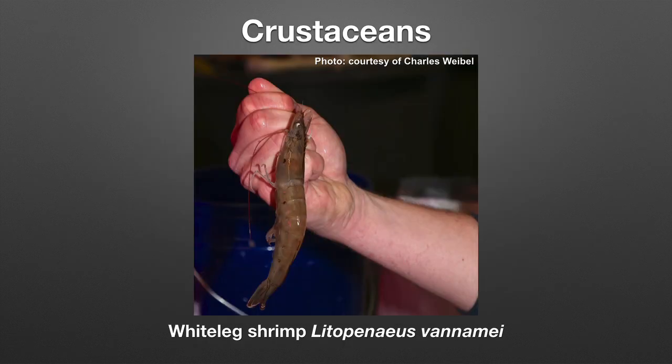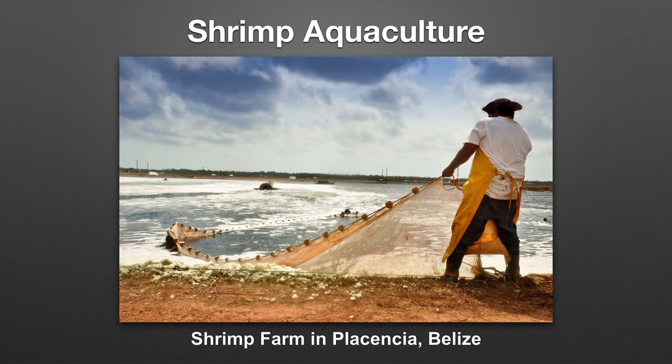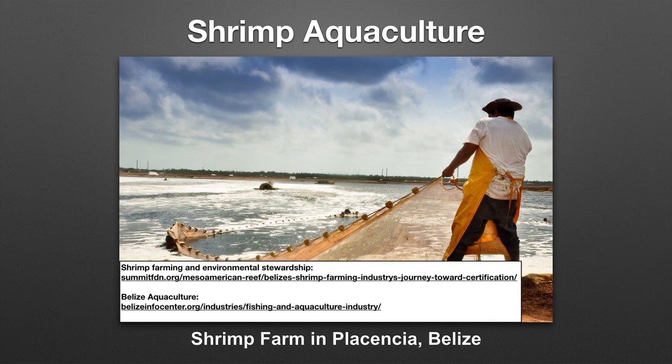Another example of a crustacean commonly cultured worldwide, including in Frankfort, Kentucky, is the white leg shrimp. In this picture you can see a seine being pulled by men harvesting shrimp at a shrimp farm in Placentia, Belize. For more about shrimp farming and environmental stewardship in Belize, the first website covers Belize's shrimp farming industry's journey toward certification, and the second link tells us about the fishing and aquaculture industry in Belize.